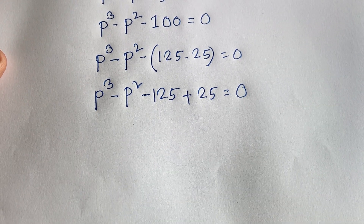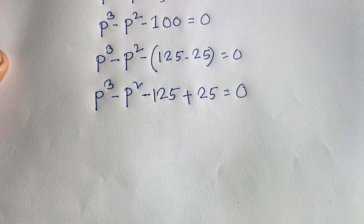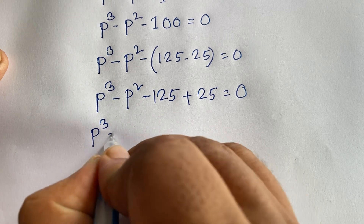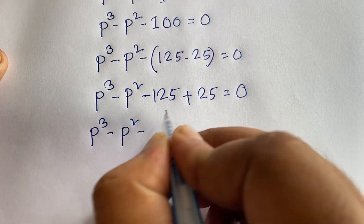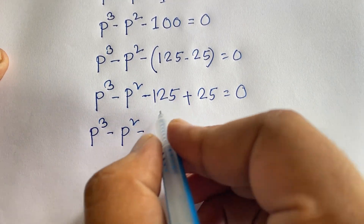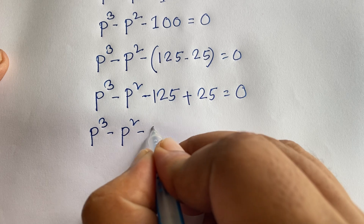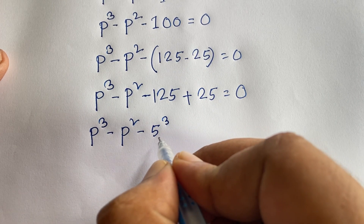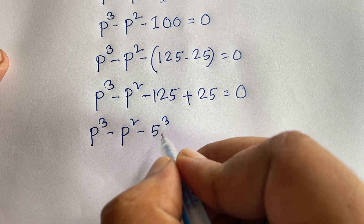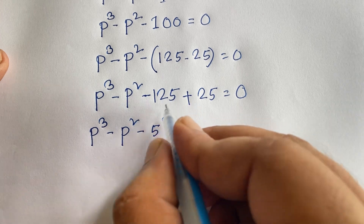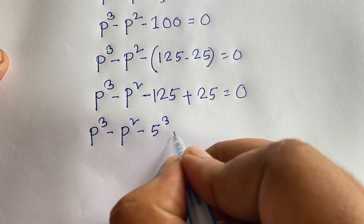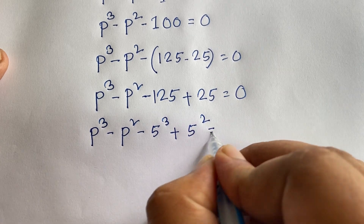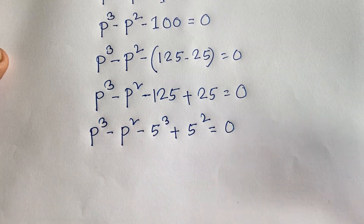Now, I can say this expression. Here is P to the power 3, minus P squared. And 125 — we know that 125 equals 5 to the power 3, because 5 times 5 is 25, and 25 times 5 is 125. Plus 25 — we know that 25 equals 5 squared — is equal to 0.